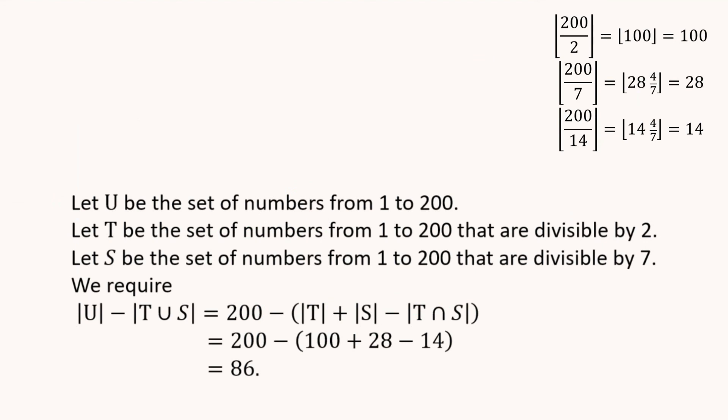So we have to be pretty clear here about what we want. We want the numbers that are not divisible by 2 nor 7. So we want the number in the universal set less the number that are divisible by 2 or 7. So that's what we want there on the left-hand side. So the number of elements of U is easy. There are 200 numbers in the universal set.